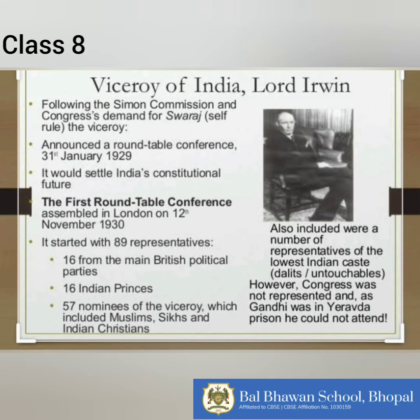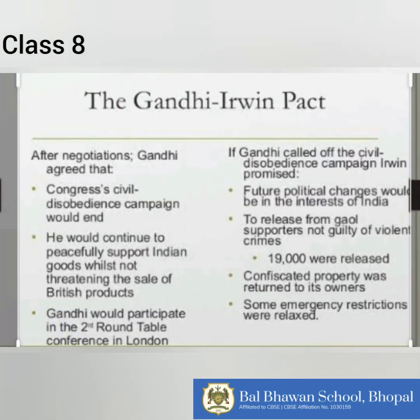The First Round Table Conference was held in London on November 12, 1930, to discuss the proposals of the Simon Commission. Many representatives attended the conference, but the Congress boycotted it. Due to the absence of the Congress, this conference could not achieve its goals. The government then made attempts to negotiate an agreement with the Congress so that it would participate in the next round of deliberations in 1931. Leading Congress leaders, including Gandhiji, were unconditionally released on January 25, 1931. An agreement was signed between Viceroy Lord Irwin and Gandhiji. According to the agreement, Mahatma Gandhi agreed to suspend the Civil Disobedience Movement and to participate in the Second Round Table Conference.